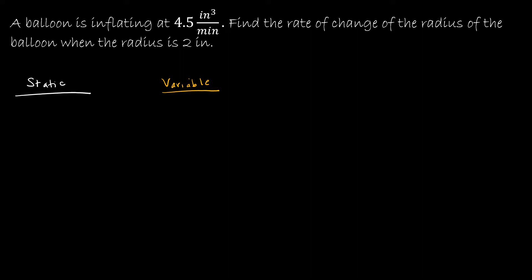A balloon is inflating at 4.5 cubic inches per minute. So this is a rate. And what is it a rate of? It is the rate of change of the volume of the balloon. So it's not specifically saying volume, but we know it's cubic inches per minute, which is a volume measure. So that means the change in volume, dV, with respect to time is 4.5 cubic inches per minute.